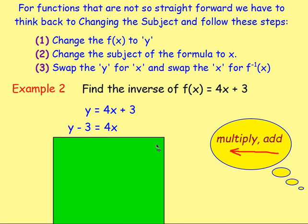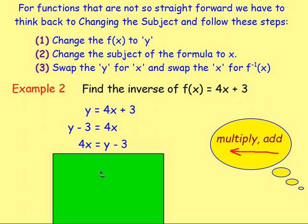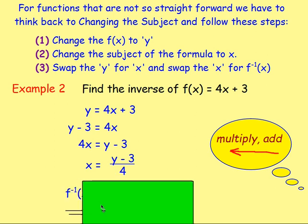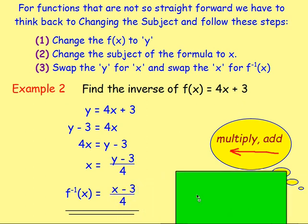After that, undo the multiply — writing it back to front: 4x equals y minus 3. Then divide both sides by four, so you're left with x equals that. That's the subject of the formula changed to x. The last thing is to swap the y for x, and swap the x with f to the negative one of x. So the inverse f to the negative one of x equals x minus 3 over 4. That is the inverse.